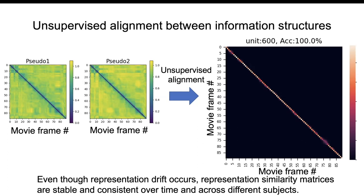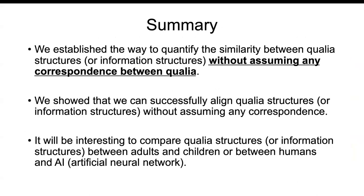In summary, we established a way to quantify similarity between qualia structures or information structures without assuming any correspondence between qualia. We showed we can successfully align qualia structures or information structures without assuming any correspondence, provided the two structures are similar enough. It will be interesting to compare qualia structures or information structures between adults and children, which may be dissimilar, or between humans and AI artificial neural networks — that is the future direction we plan to pursue. Thank you.